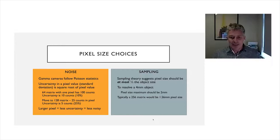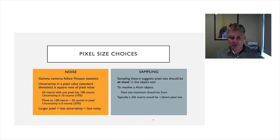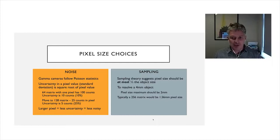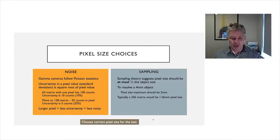Sampling theory dictates that pixel size should be at most half the object size. So if we were trying to resolve a four millimeter object, the pixel size should be two millimeters. For a standard gamma camera field of view, a 256 matrix gives a pixel size of 1.56 millimeters. So for intrinsic spatial resolution measurements around four millimeters, a matrix size of 256 or better is appropriate. Different tests will push you either towards reducing noise or towards improving spatial sampling.